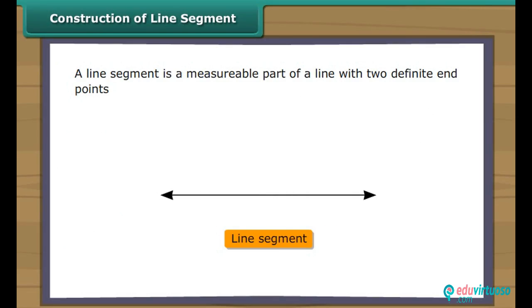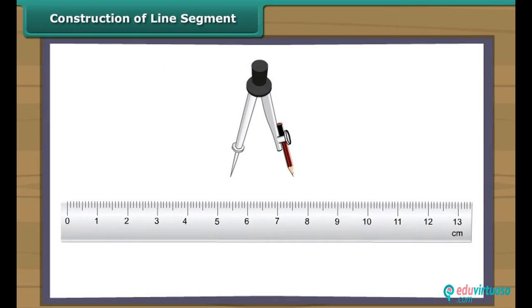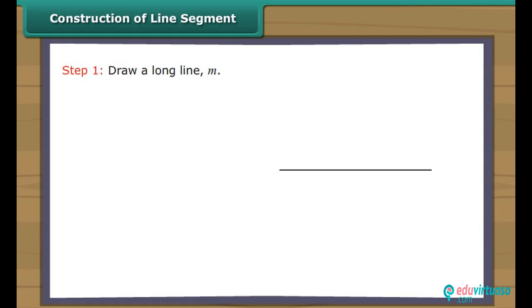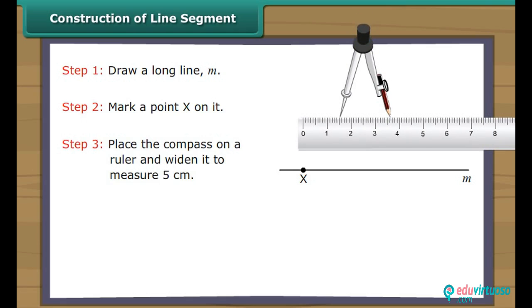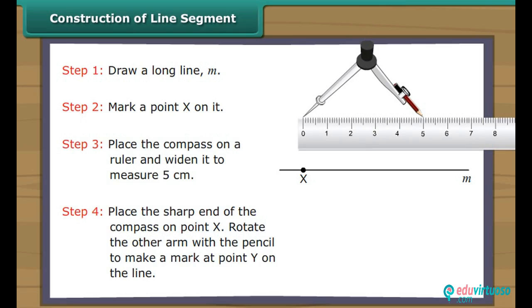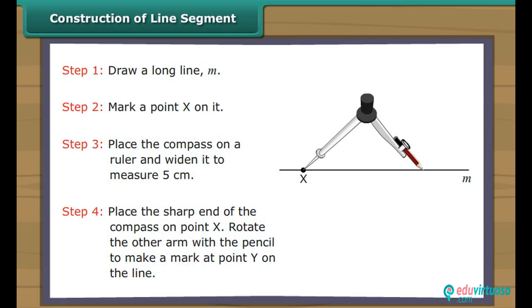Construction of line segment. A line segment is a measurable part of a line with two definite end points. We use a ruler and a compass to construct a line segment. Let us construct a line segment five centimetres long. Draw a long line M. Mark a point X on it. Place the compass on a ruler and widen it to measure five centimetres. Place the sharp end of the compass on point X. Rotate the other arm with the pencil to make a mark at point Y on the same line. We have a line segment XY which is five centimetres long.